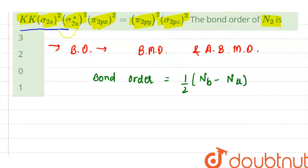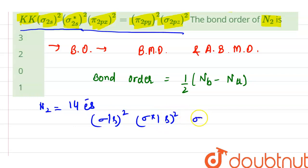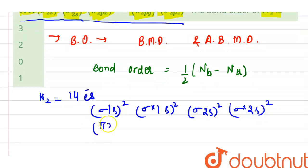So here we are given configuration of N2 molecule. N2 means 14 electrons are present and its configuration is sigma 1s², sigma star 1s², sigma 2s², sigma star 2s², pi 2px² equal to pi 2py², and sigma 2pz².